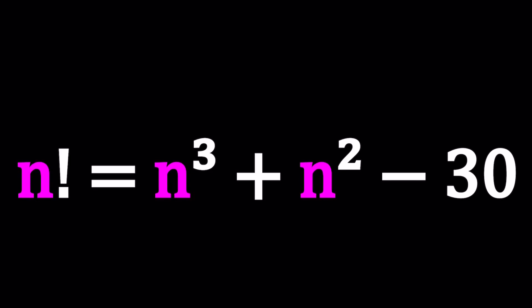Hello everyone. In this video we're going to be solving a factorial equation with cubes. We have n factorial equals n cubed plus n squared minus 30. And n is a non-negative integer. We're going to solve for n.